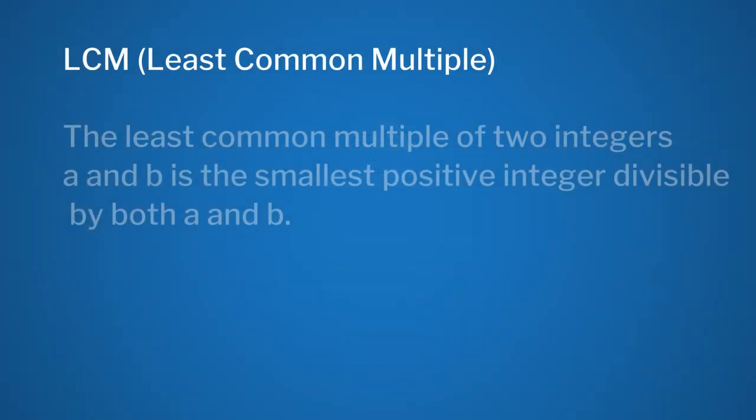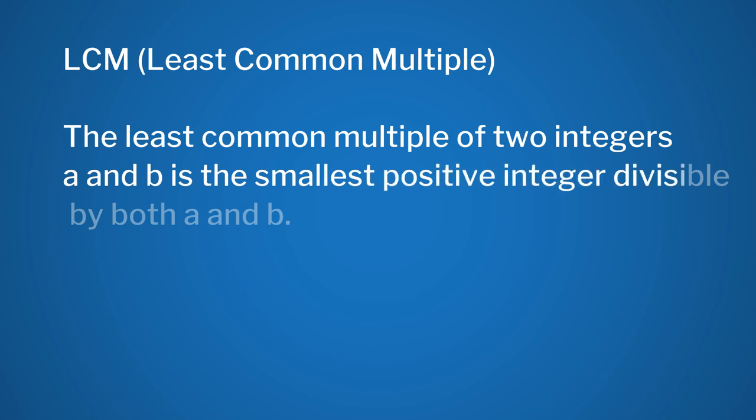Now we are going to try to figure out how to find the LCM of given numbers. The LCM, that is the least common multiple, of two integers A and B is the smallest positive integer divisible by both A and B. There is only one way to calculate the LCM. With the help of an activity, we will find the LCM of the following numbers.